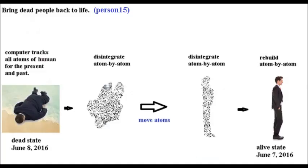Ghost machines can come in different sizes and shapes — they can manipulate large objects like a building or small objects like a water molecule. The ultimate goal is to manipulate individual atoms and molecules. One example is ripping a person apart atom by atom and putting all the pieces back together again. If this technique is perfected, the human race needn't worry about old age or death.